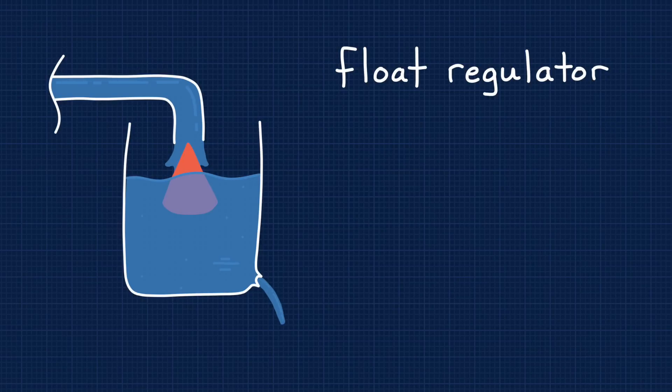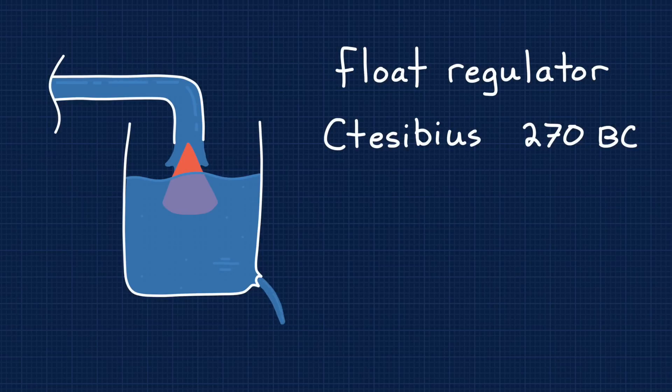The first documented negative feedback control system is generally believed to be the float regulator developed by Tesibius in 270 BC. To maintain the water level in a tank, a wedge-shaped float would allow more water in when the level was too low and less water when the level was too high.